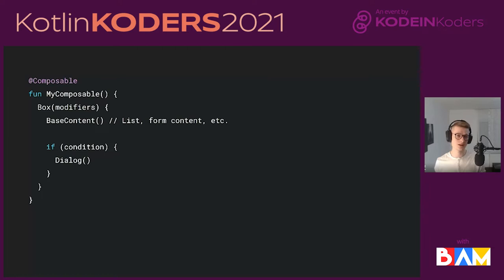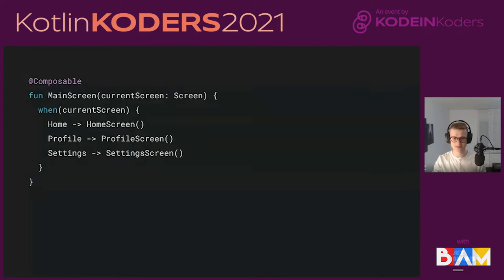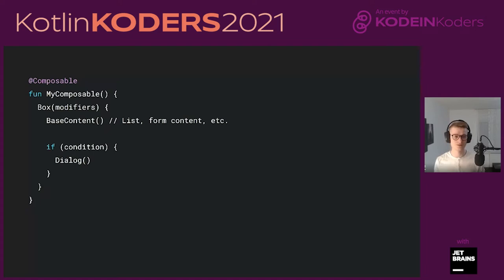Alternatively, we can have a Box component that allows rendering multiple types of components on top of each other — overlaying things. You can have some base content like a list or user information, and an if-check with some condition to show a dialog on top. When coming from XML, this can seem weird — just an if-check with no else. But in Compose, unless a function is called inside a Composable, it's not rendered on the UI. We show base content at all times and only show the dialog when a condition is met.